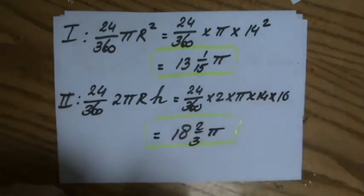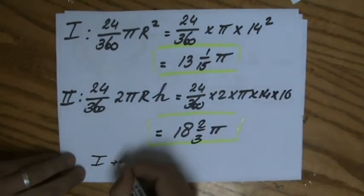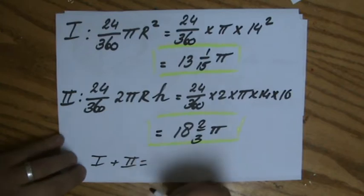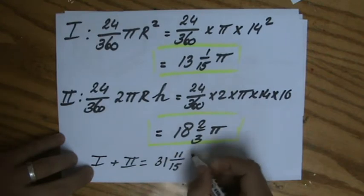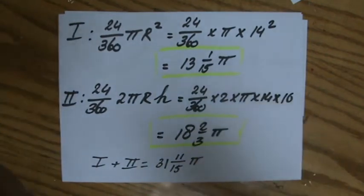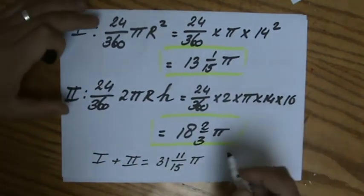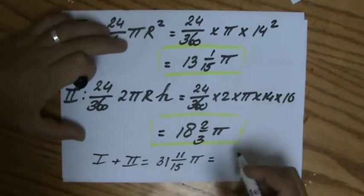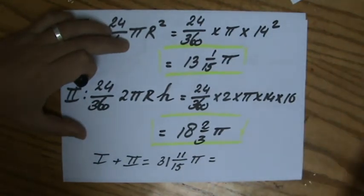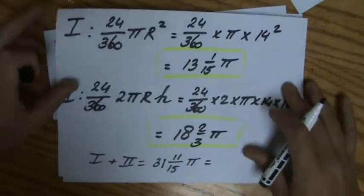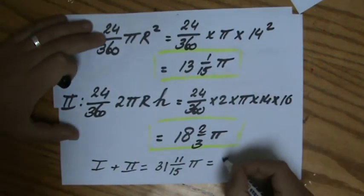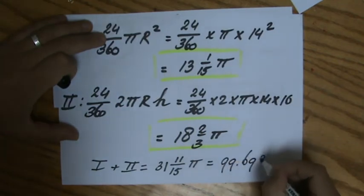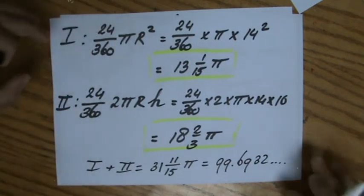Those are the areas of those two pieces. Now you know what my next step is: I have got to add those two areas. Area 1 plus area 2, in terms of π that's going to be 31 11/15 of π. My final answer I'm not going to give in terms of π, I am going to give the actual number.